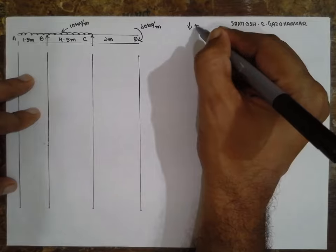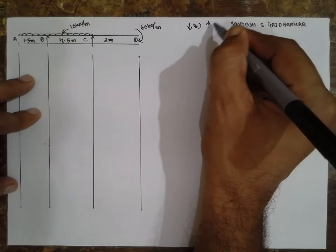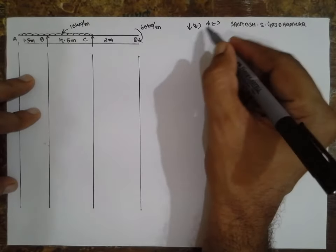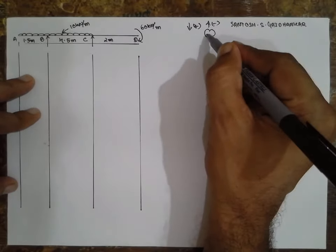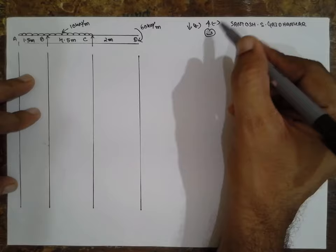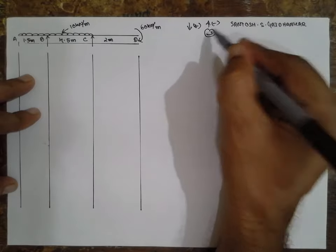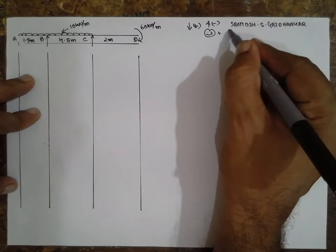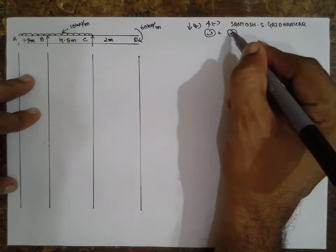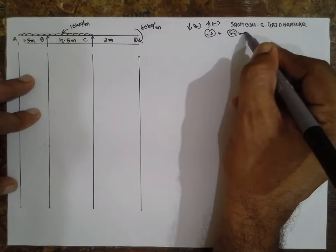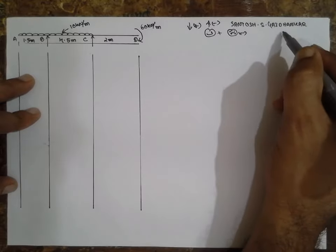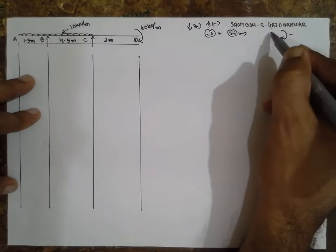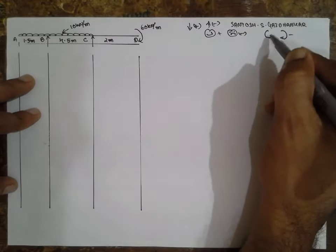Sign conventions: downward arrow positive, upward negative, sagging positive, hogging negative, clockwise negative, anti-clockwise positive.